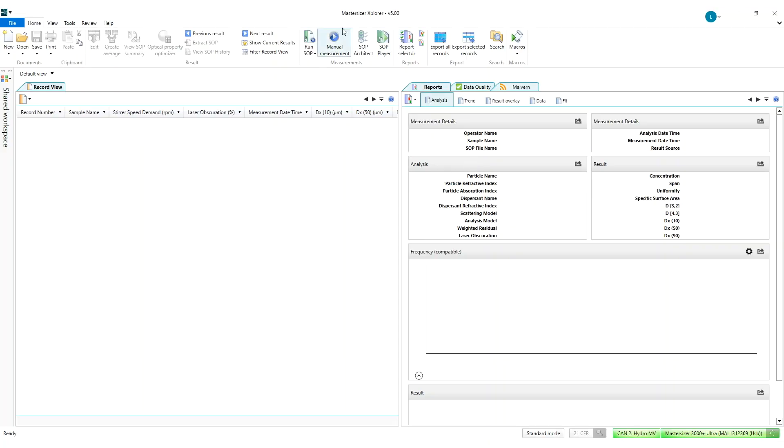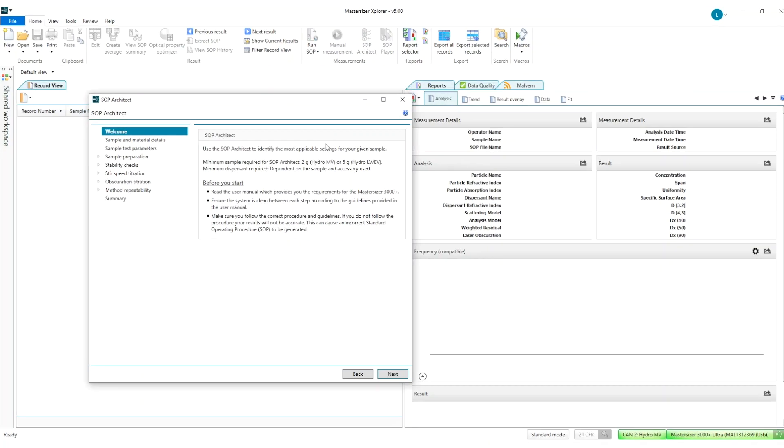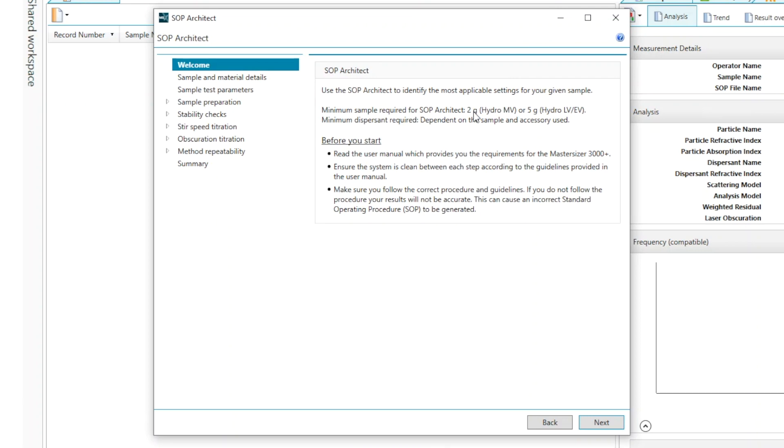So I'll now open up SOP Architect on the Mastersizer Explorer software. SOP Architect is a guided workflow that's going to take us through the necessary steps to ensure that we have an ideal method developed for measuring our sample.